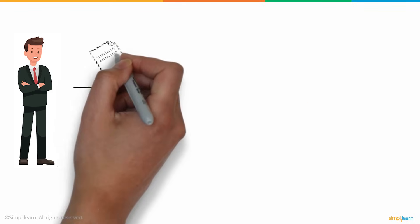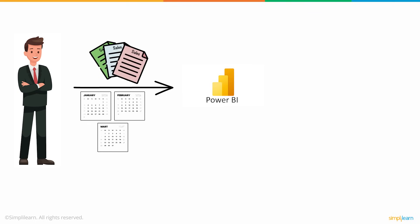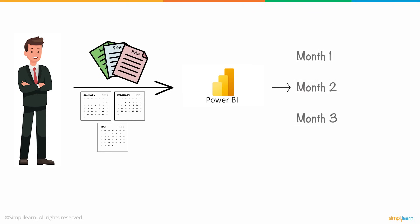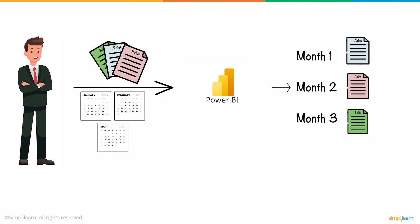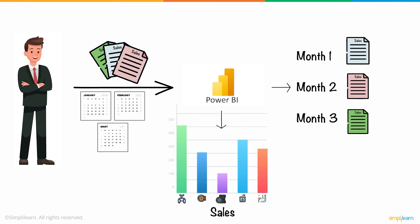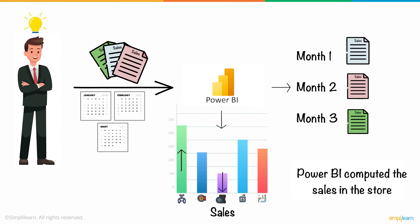Ben collected his store's entire sales data from the previous quarter and ingested it into Power BI. He was able to categorize the data based on monthly sales. It took the daily sales and considered it as the x-axis, and then Power BI computed the sales in the store. Ben clearly understood the products that outperformed the sales charts and the products that did not have much demand.